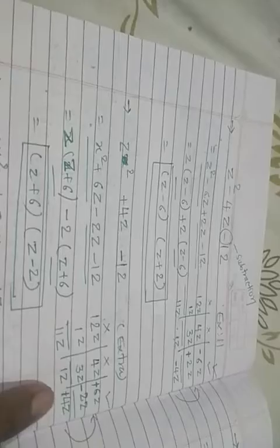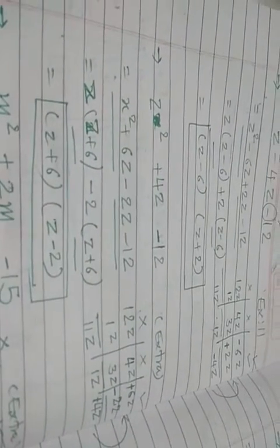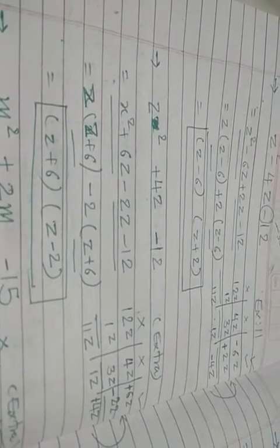Now a similar type but here we need plus 4z as the answer instead of minus 4z. So the same factor pair 6 and 2 is used, but now plus goes to 6 and minus to 2. So it becomes plus 6z minus 2z. The rest of the method is the same.